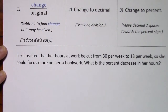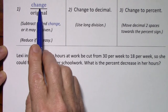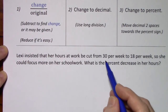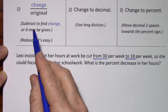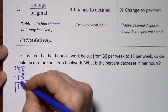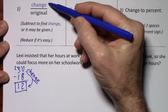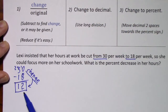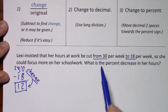I'll give you a moment to read the sentence. Referring to the change from the original value to the new value, it's going to be from 30 to 18. We will subtract to get that value, so we have a change of 12. Since we want the change over the original, we'll have 12 over 30.